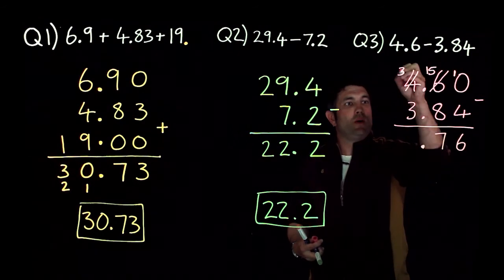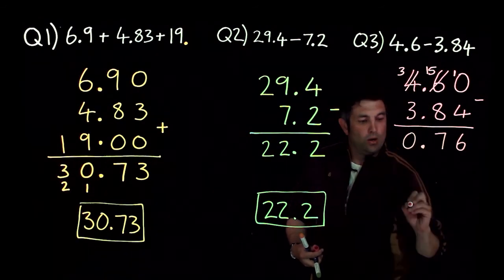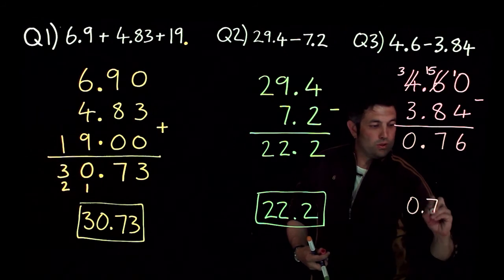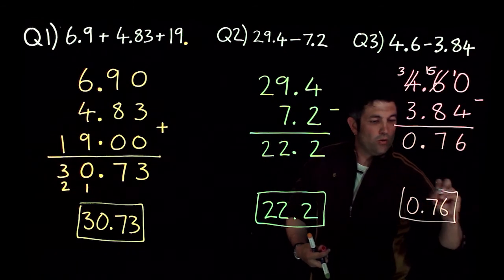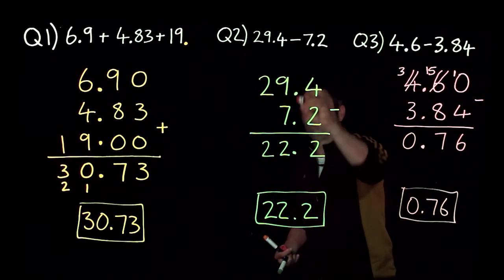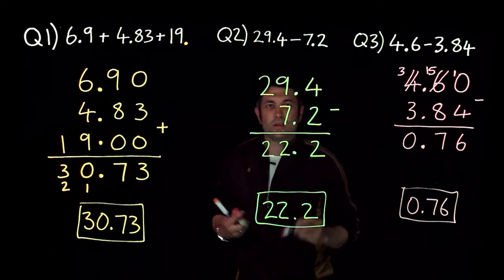Don't forget the decimal point. 3 take away 3 is 0 and there's our answer 0.76. Key to this, get the decimal points in a column and then everything's in the right place.